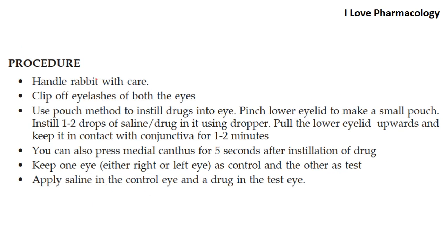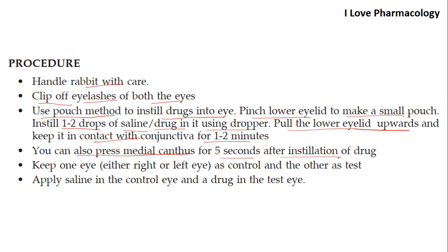For the procedure: handle the rabbit with care, clip off the eyelashes of both eyes, and use the pouch method to instill drugs. Pinch the lower eyelid to make a small pouch and instill one or two drops of saline into the control eye and the test drug into the test eye using a dropper. Pull the lower eyelid upward and keep it in contact with the conjunctiva for one to two minutes.